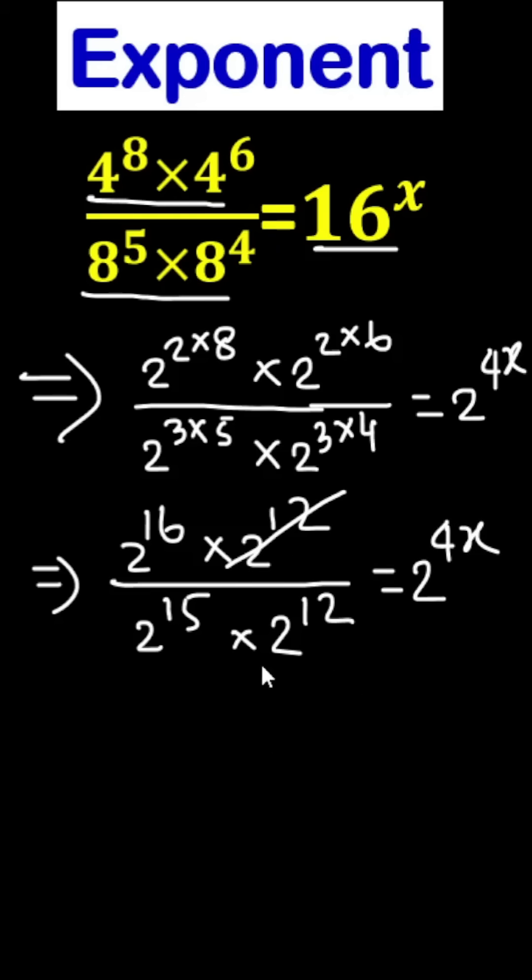So this 2 to the power 12 and this 2 to the power 12 we can cancel out. And here is 2 to the power 16 and 2 to the power 15. We can write 2 to the power 16 minus 15 equals to 2 to the power 4x.